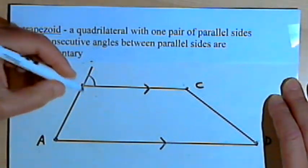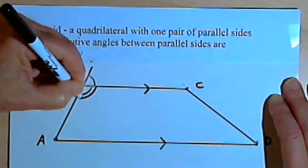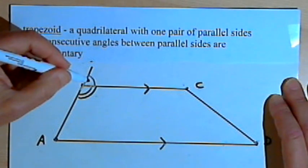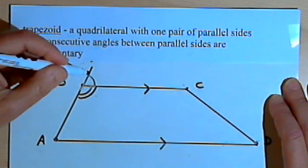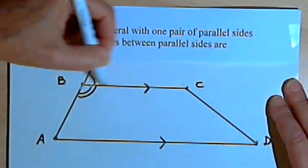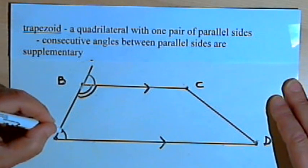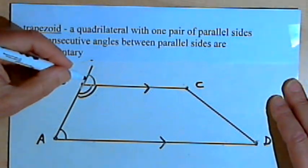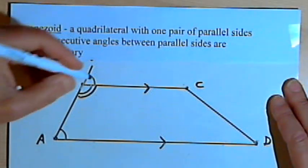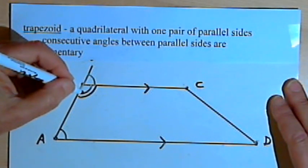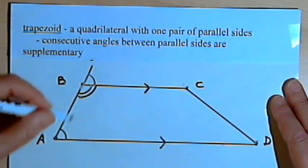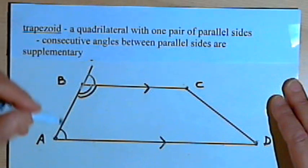There's that exterior angle, and right next to it is the interior angle. These two angles together form a straight line, a 180-degree angle, which means that they're supplementary angles. Now side AB is a transversal that intersects parallel lines BC and AD. So that means the angle at A has to be congruent with the exterior angle at B, because they're corresponding angles along a transversal. The exterior angle at B is supplementary to that interior angle at B, so angle A must also be supplementary to it. Therefore these two interior angles — consecutive angles between parallel sides — are supplementary.